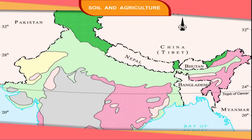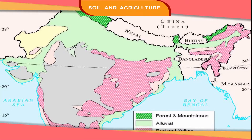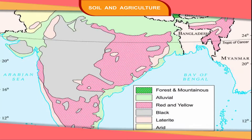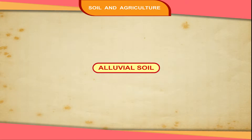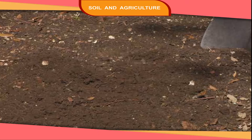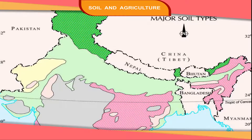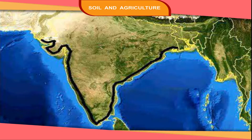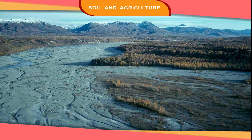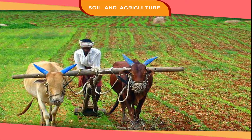There are mainly six types of soil found in India. Alluvial soil is found mainly in the northern plains. It is also found in the coastal plains. It is made up of alluvium brought by rivers. Alluvial soil is very fertile.